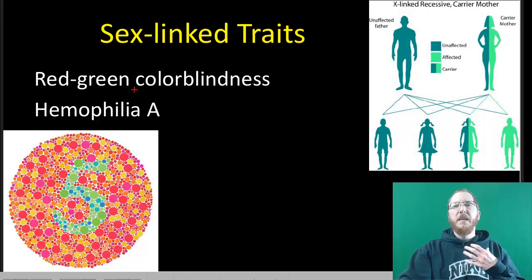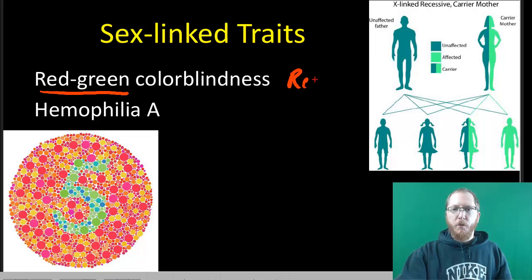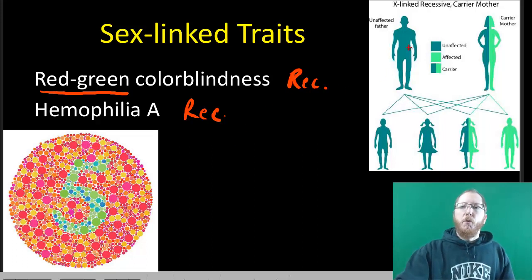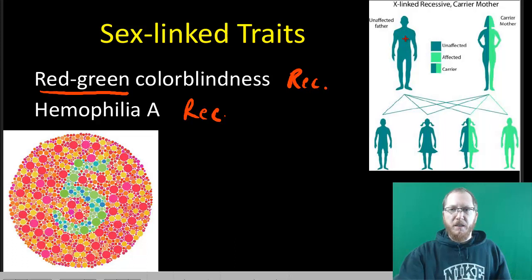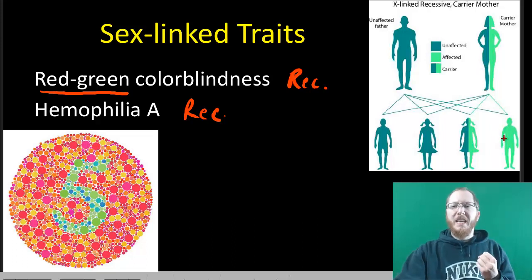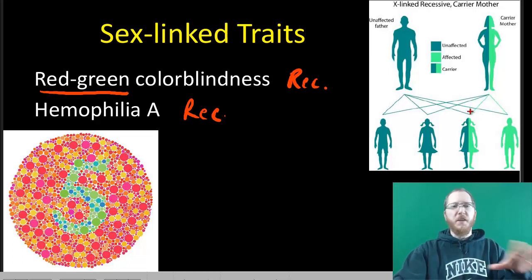Red-green colorblindness, mentioned briefly in the previous section on sex linkage, is where you have difficulty distinguishing those particular colors. It is located on the X chromosome and is a recessive condition, so it affects mostly males because they only have one chance to get a good allele — if mom gives them a bad allele, they're stuck with it. Males can be unaffected or affected, but they cannot be a carrier. Females, however, can be carriers — they're heterozygous, not colorblind themselves, but they carry the allele and can pass it to their sons. The father gives a Y chromosome, so he contributes nothing for colorblindness.